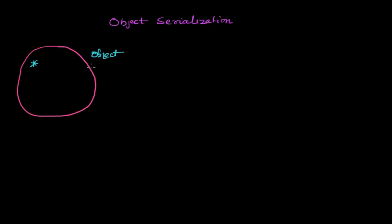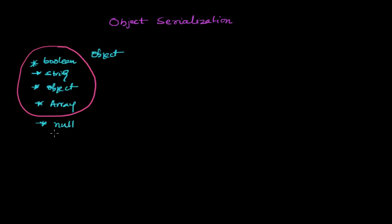We have learned enough about object methods, properties, and attributes. Now I am going to teach about object serialization. Object serialization is a process by which you convert any object to a string. An object is a collection of different properties — these properties may be boolean, string, another nested object, array, null, and so on — all the primitive types.